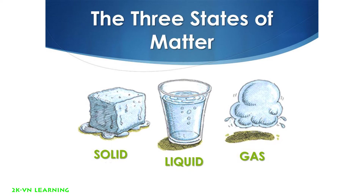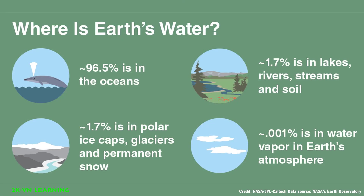Solid, for example, is ice. Liquid is the water that we drink, use to bathe, or use to swim in. Gas is where boiling water comes from — water vapor. Liquid water is found in Earth's oceans, rivers, lakes, streams, and even in the soil and underground.